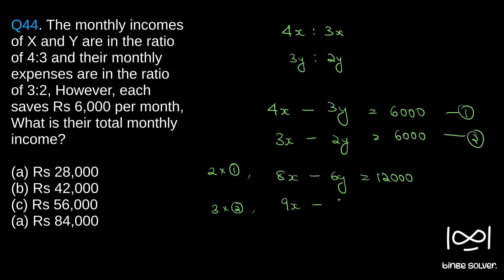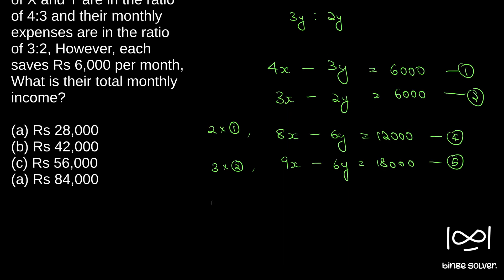Let this be 4 and 5. So 5 minus 4—if you subtract 5 and 4, we get 9x minus 8x is x, minus 6y minus minus 6y cancels out. So x equals 18,000 minus 12,000, which is 6,000.